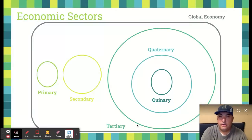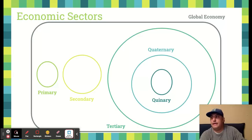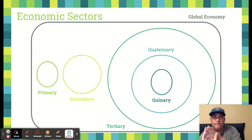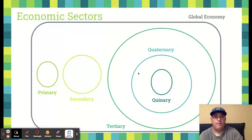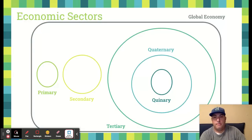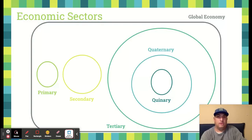Within the tertiary sector, there are two more sectors. You have the quaternary sector — the fourth sector — which has to do with the sharing, processing, researching, and cultivating of information. Essentially anyone who deals with the creation or maintenance of information is in the quaternary sector. And then within that, you have the quinary or fifth sector — these are your big decision makers. The quinary sector is all about the people who take the information produced in the quaternary sector and decide what to do with it. So these are going to be your CEOs, politicians, people who are relatively powerful.